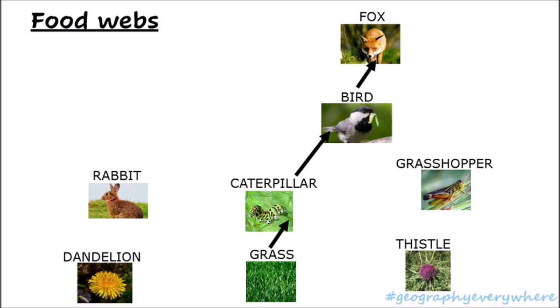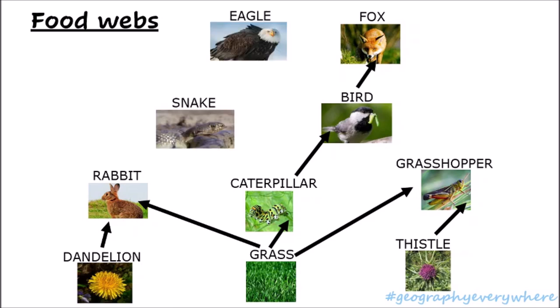We might also have rabbits and grasshoppers in our habitat. We can say that the rabbit eats the dandelion, and the rabbit can also eat the grass, so there are two arrows there. The grasshopper eats the grass and also eats the thistle. Let's also imagine that there is a snake and an eagle flying around.